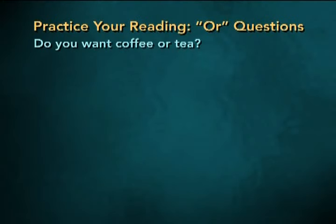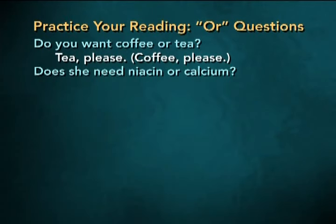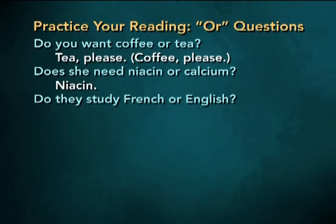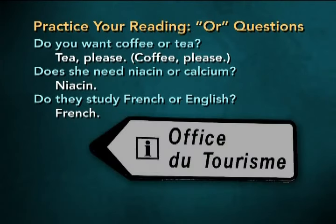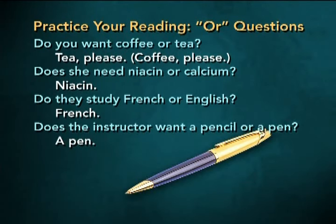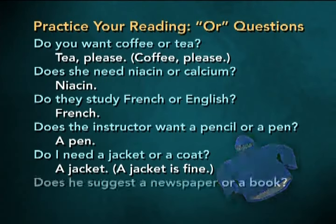Now look at these questions. For B-verb questions, these are what we call "or" questions — they provide a simple choice of answers. Do you want coffee or tea? Tea please. Does she need niacin or calcium? Niacin. Do they study French or English? French. Does the instructor want a pencil or a pen? A pen. Do I need a jacket or a coat? A jacket. Does he suggest a newspaper or a book? A newspaper.